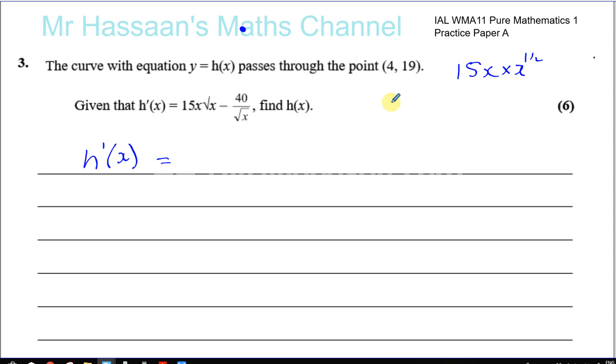The square root of x is x to the power of a half, so we have to add these powers. So it's 15x to the power of one and a half, or three over two, minus. And here you've got 40 over x to the power of a half, which is the same as 40 times x to the power of minus a half. Now this is ready for integration.